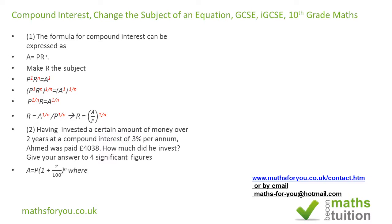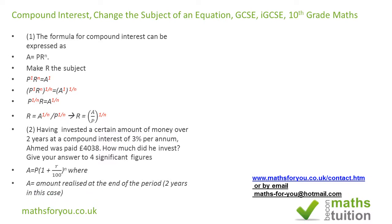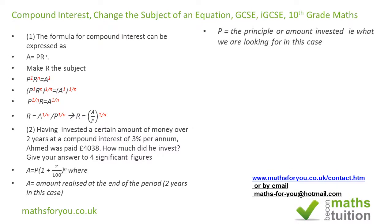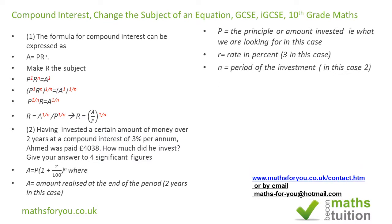Here, A is the amount realised at the end of the period — 2 years in this case — P is the amount invested, R is the rate of interest which is 3%, and N is the number of years, the period of investment. We now substitute all these values into the formula.